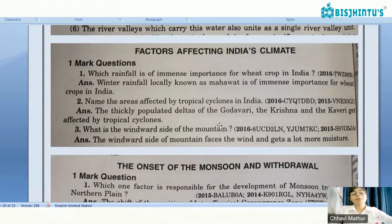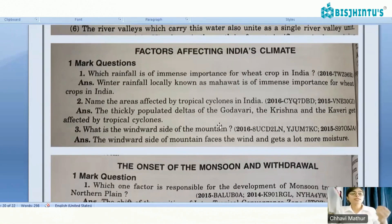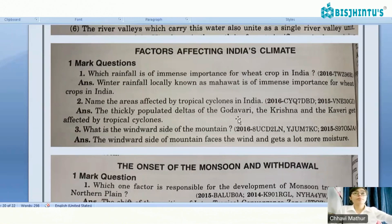Please don't get confused — rabi crops have many varieties. So any crop from the rabi season can be asked in a question. Next: Name the areas affected by tropical cyclones in India. The thickly populated deltas of Godavari, Krishna, and Kaveri are affected by tropical cyclones.